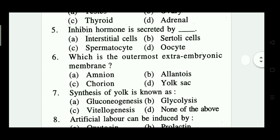Number six: which is the outermost extra-embryonic membrane? Options: amnion, allantois, chorion, yolk sac. Which one is correct? This is chorion — option C is correct.